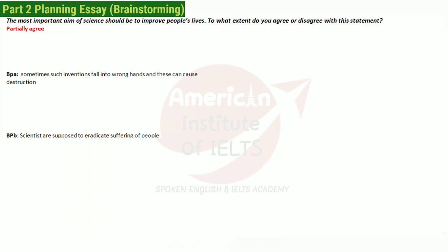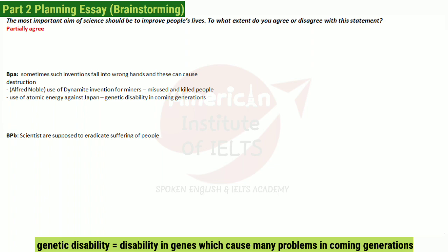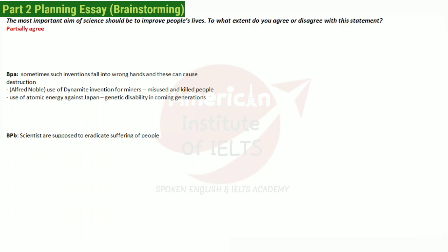For body paragraph 1, let's build points. We can take the example of Alfred Nobel, who was a scientist and invented dynamite. He actually invented it to help miners, but it was misused and it killed people — he himself didn't misuse it, others did. Similarly, there is the story of atomic energy — we all know it was used against Japan. Bombs were dropped on Hiroshima and Nagasaki at the end of World War 2, and as a result there was genetic disability in coming generations. Even now, generations in Japan still have such disabilities.